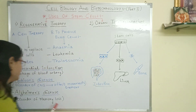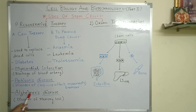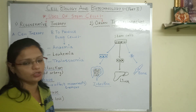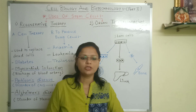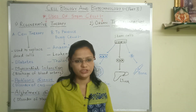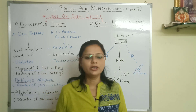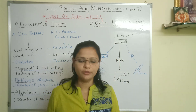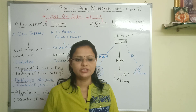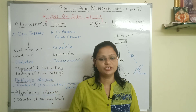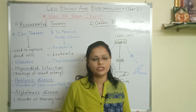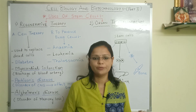Next we are going to see Alzheimer's disease. What is Alzheimer's disease? It is a disease of memory loss. Generally it happens in old age, but it can also happen in early stages. What happens in this stage? People start to forget little things.